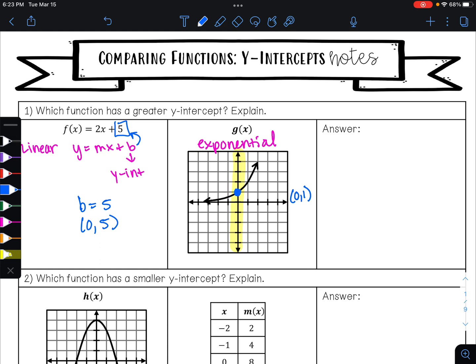And we want to know which one has a greater y-intercept. So which one is greater, 5 or 1? 5 is greater. So f(x) has a greater y-intercept because 5 is greater than 1.